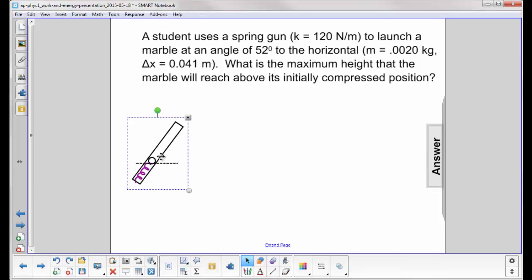Let's sketch what we have here. Here's our marble launcher at an angle of 52 degrees. The marble has already been pushed down, compressing the spring fully, so our reference line is right here. That's the initially compressed position. We're going to call that h equals zero.